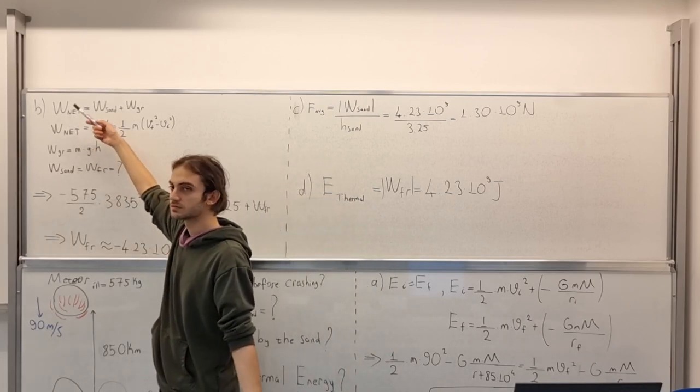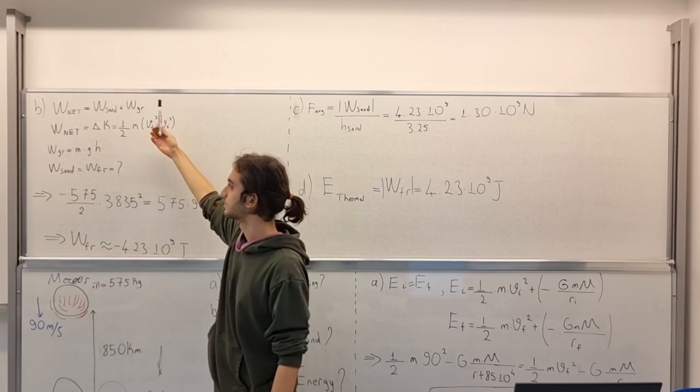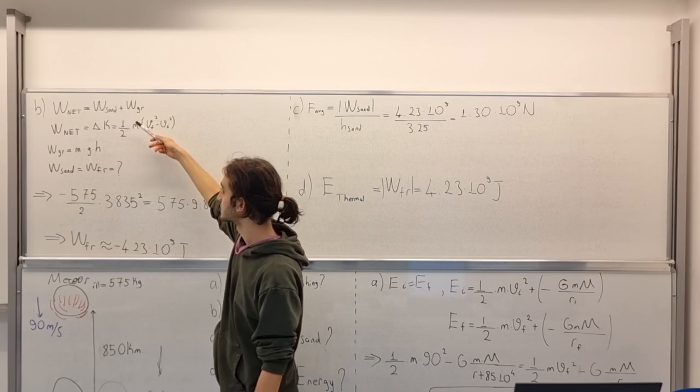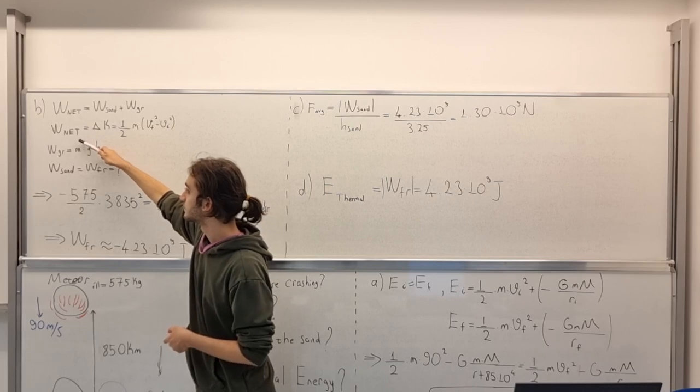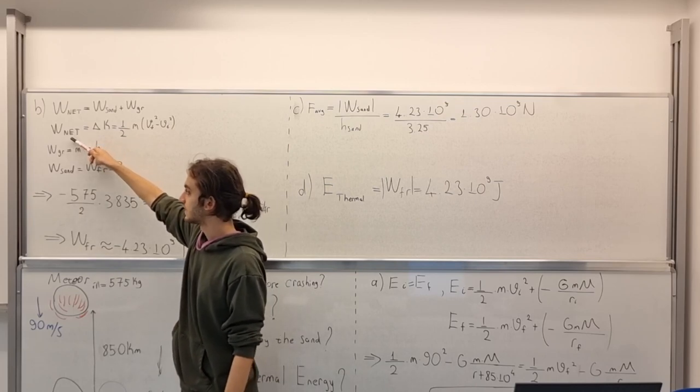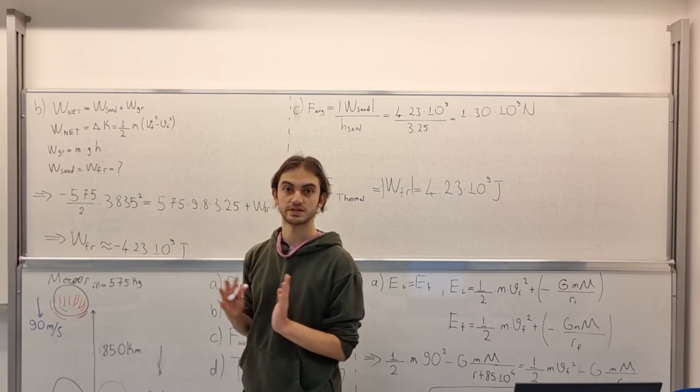We can write the net work equals work done by sand plus work done by gravitational force or gravitation. And we know that work net equals delta K, the change in kinetic energies.